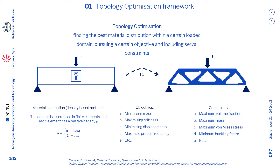Topology optimization can be defined in several ways. Here I have reported a very intuitive and practical explanation. Topology optimization is the procedure aimed at finding the best material distribution within a certain loaded domain, chasing an objective, and under prescribed constraints. One of the most employed methods is the density-based method. In this method, the domain is discretized into finite elements, and each element has its own relative density, called rho. The relative density is 0 if the element can be considered void material, whereas it is 1 if the element can be considered full material. At the end of the optimization, the rho equal to 1 zones will define the final topology.